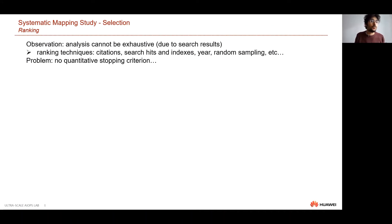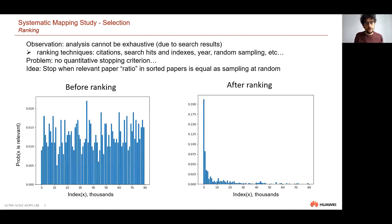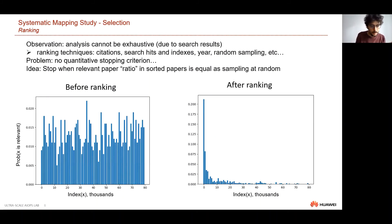The challenge with prioritization is that there is no objective stopping criterion. To address this, we observe that once we sort the papers, the average relevance starts high but decreases rapidly past the bulk of relevant results, eventually reaching a distribution similar to random exploration. We stop when the average relevance of newly found ranked papers drops below the average random relevance — approximately 2.5% or 1.5% in this case. This occurs when we have identified approximately 430 relevant papers.